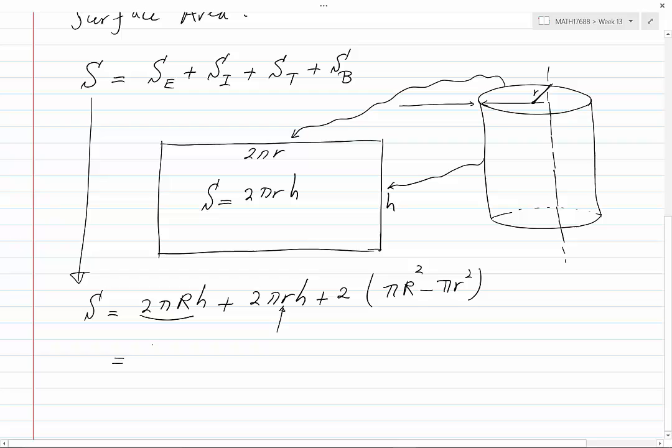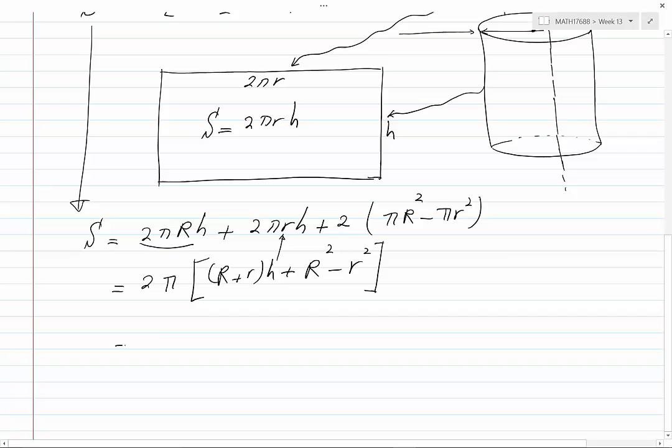It becomes 2 pi, which I can factor from all of the expression, times capital R plus small r times h plus capital R squared minus small r squared. I have just rearranged the terms. Now I plug in the values. This becomes 2 pi times (10 plus 8) times 15 plus 10 squared minus 8 squared. This is equal to 612 pi, which is approximately 1923 centimeters squared.